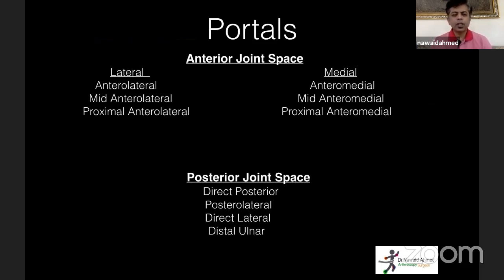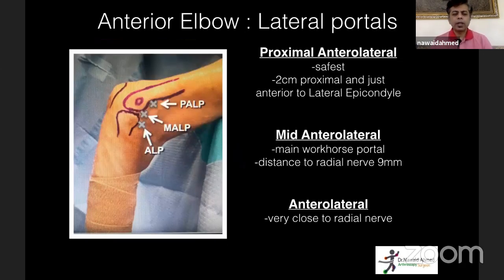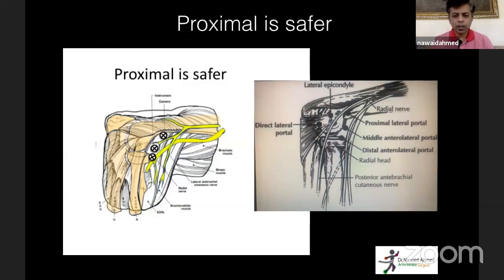Coming to portals — there are many with overlapping names. For simplicity, the elbow is divided into an anterior compartment and a posterior compartment. In the anterior compartment, you have portals on the lateral and medial sides. In the posterior compartment, you have portals on the posterior and lateral sides, but not on the medial side — because posteromedially you have the ulnar nerve.